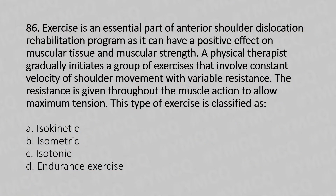Exercise is an essential part of the anterior shoulder dislocation rehabilitation program, as it can have a positive effect on the muscular tissue and muscular strength. A physical therapist gradually initiates a group of exercises that involves constant velocity of shoulder movements with variable resistance. The resistance is given throughout the muscle action to allow maximum tension. This type of exercise is classified as: